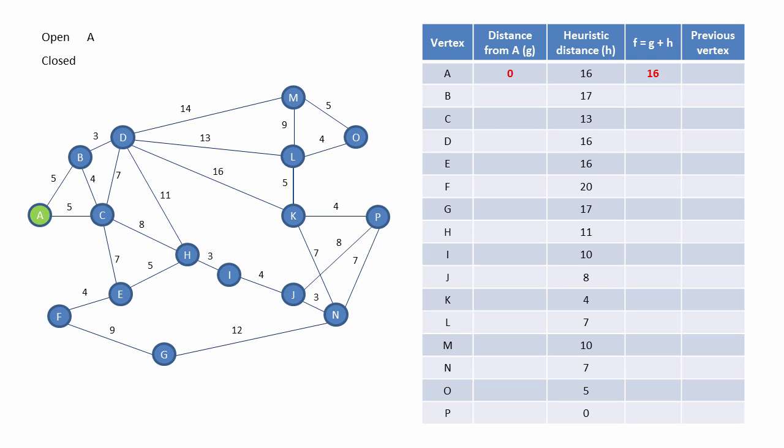The G value for A is then added to the heuristic distance from A to P, and this gives us an F value of 0 plus 16, that is, 16. Now we add any vertices that are adjacent to the current vertex to the list of open vertices. In this case, B and C. And we calculate their F values by adding their distances from A to their H values. We also make a note of the vertex that we came through to get to each of these in the previous vertex column. Now we can add vertex A to the list of closed vertices.